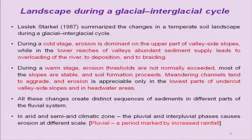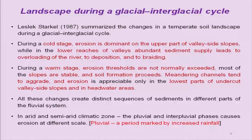All these changes create distinct sequences of sediments in different parts of the fluvial system. In arid and semi-arid climate zones, pluvial and inter-pluvial phases cause erosion at different scales. A pluvial is a period marked by increased rainfall, mostly common in such regions. So the cold climate determines what type of landscape you envisage — whether erosion occurs in upper or lower ridges — and what happens during warm stages.